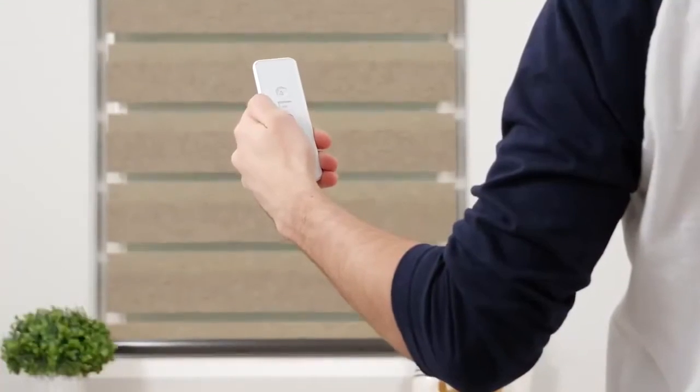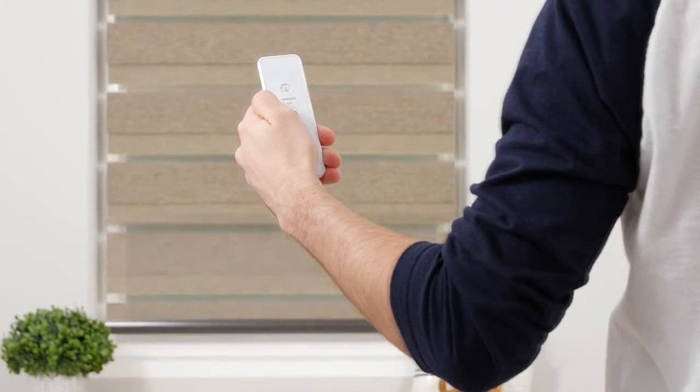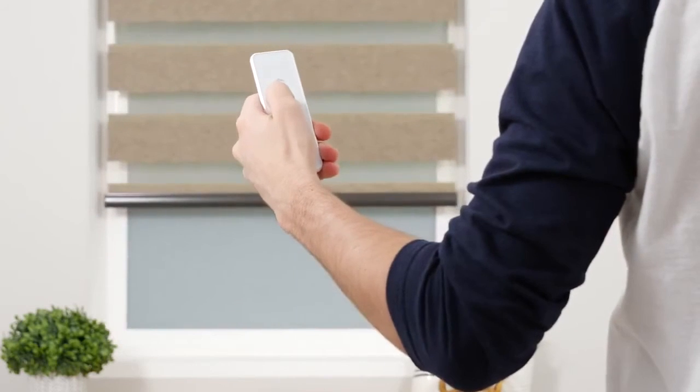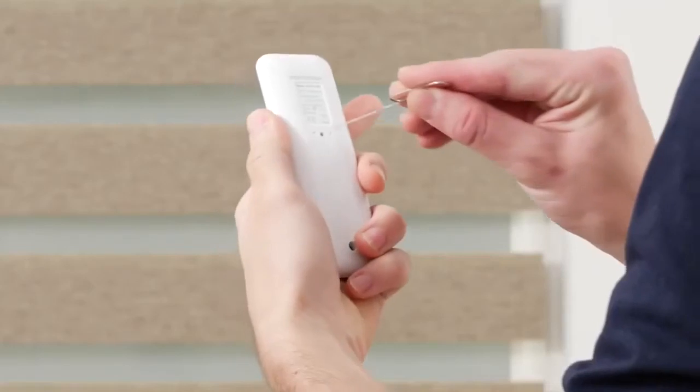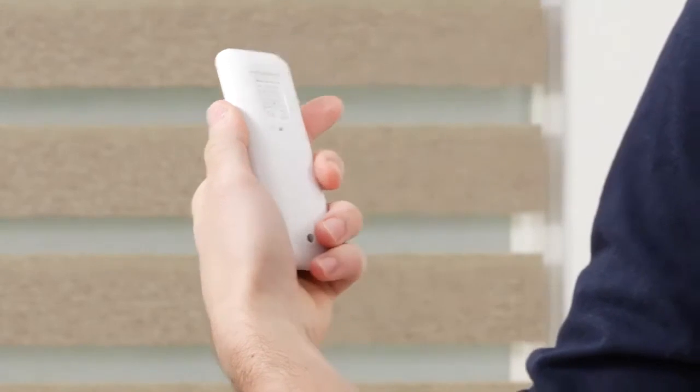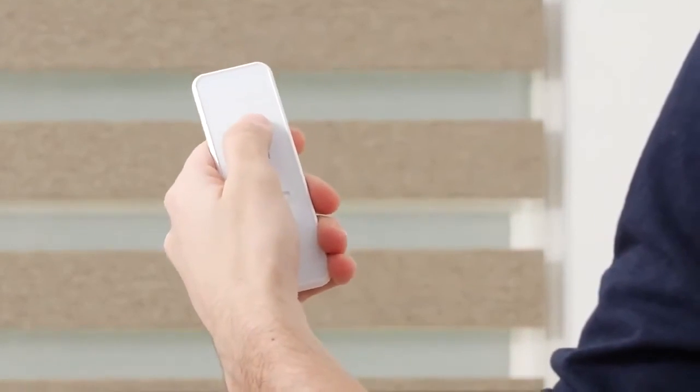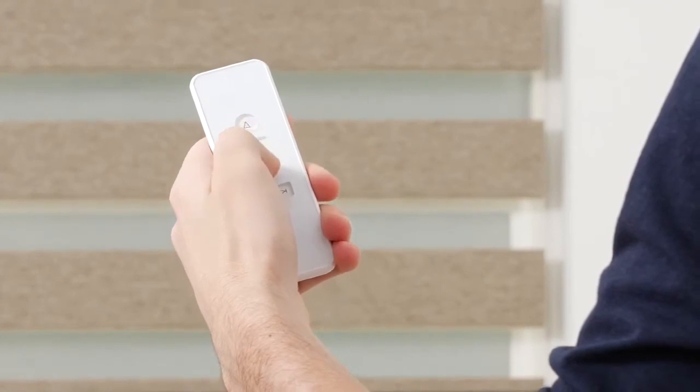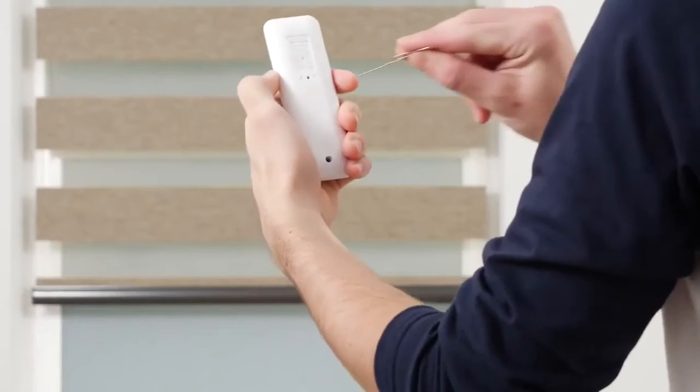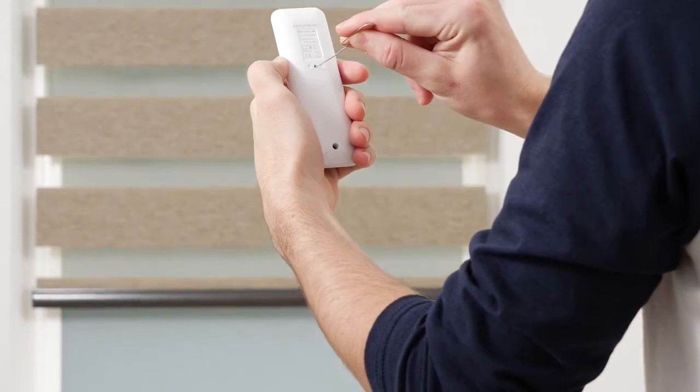Using the up and down buttons, move your shade to your desired favorite position. Press the program button on the back of your remote until the shade jogs to indicate that it is now in limit setting mode. Adjust the shade if needed until it reaches your favorite spot. Then press the program button and the shade will jog to confirm that your favorite position is now saved.